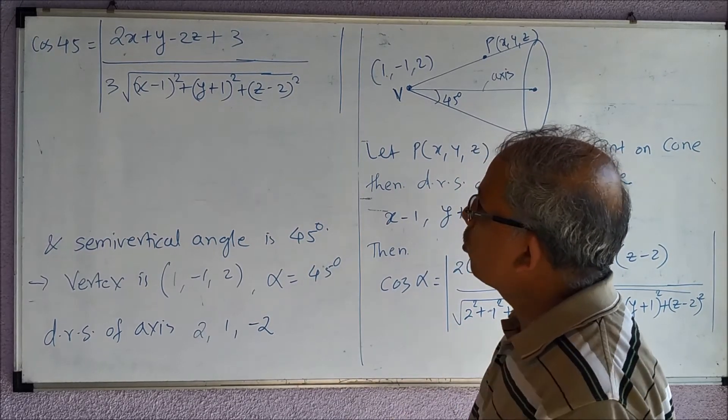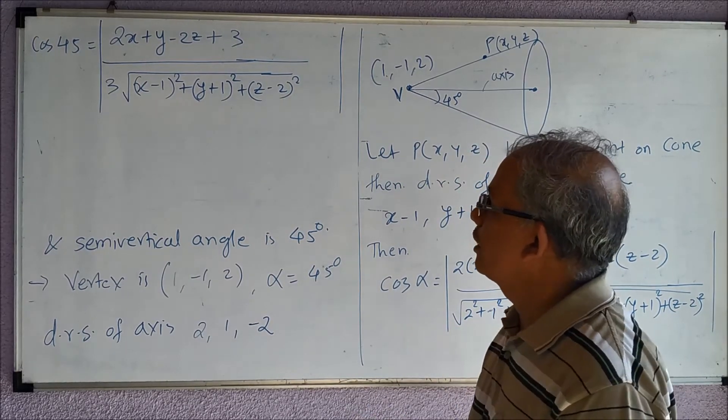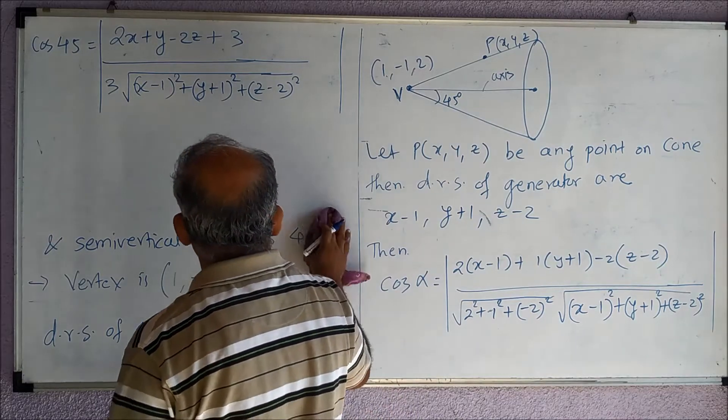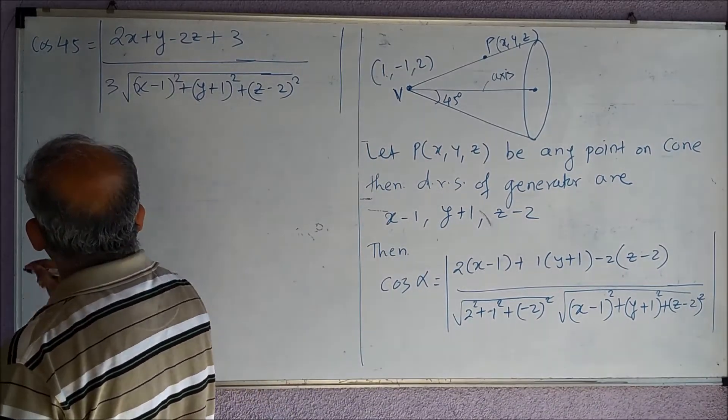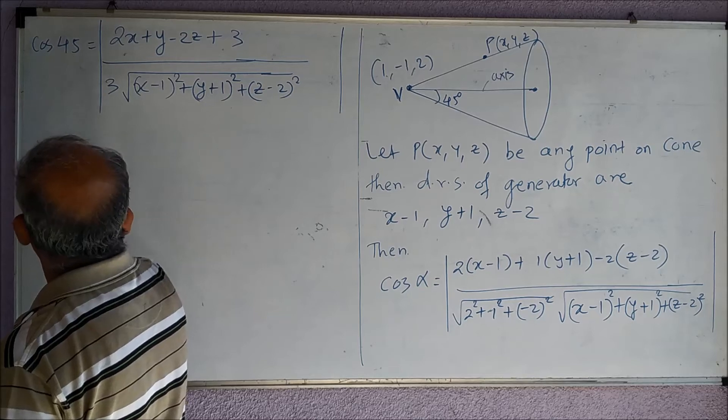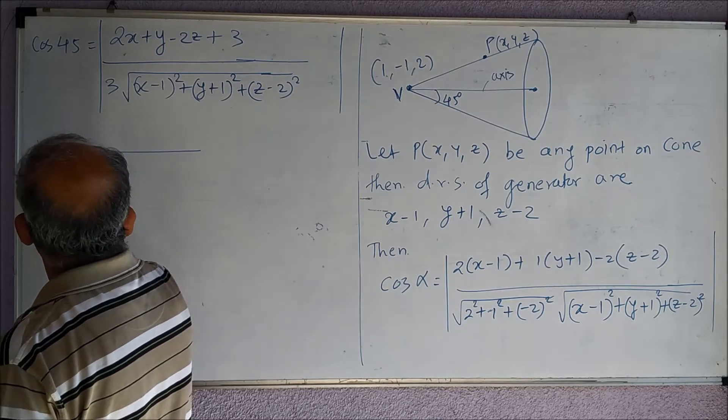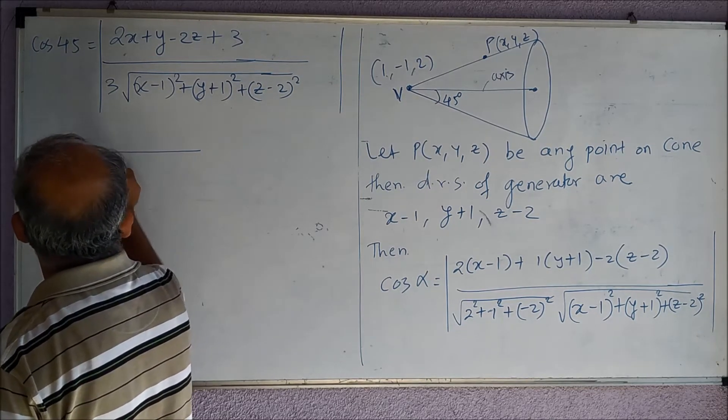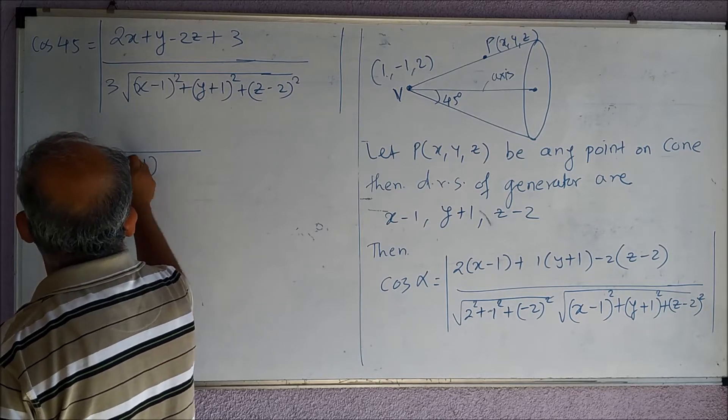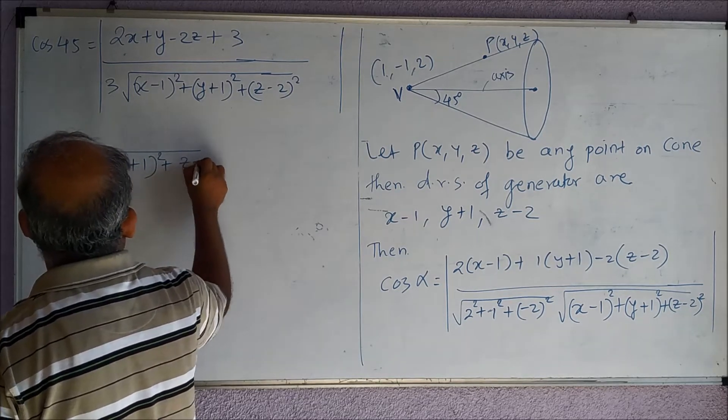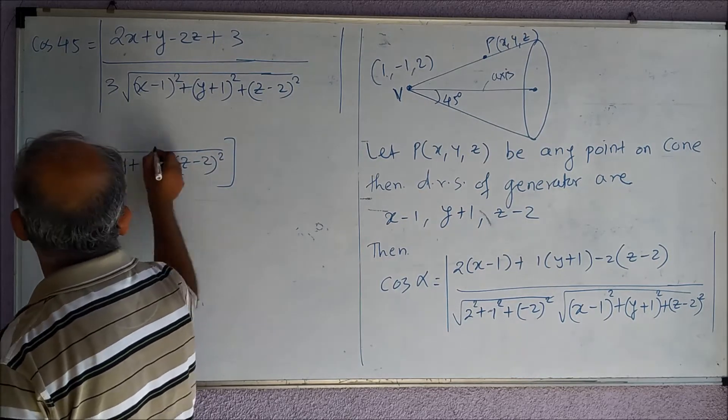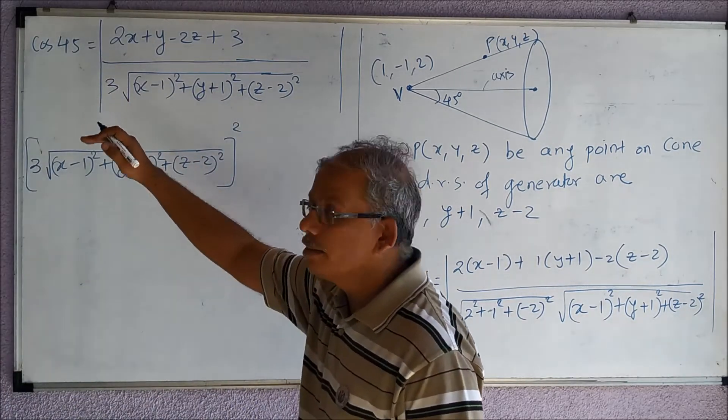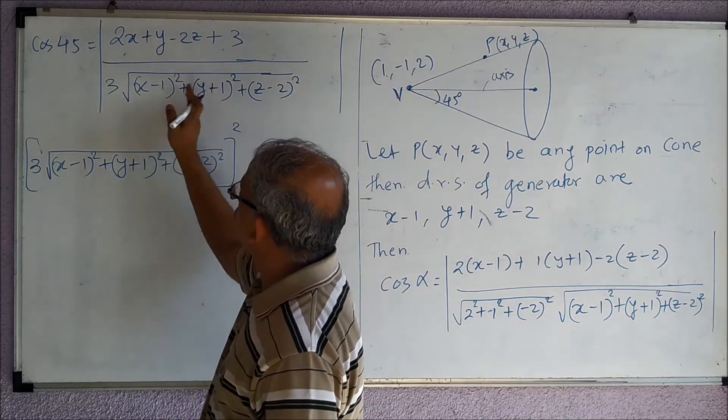Now we know the cos(45°) which is 1/√2. Then what we will do is we will cross-multiply and then square both sides. So we have here 3√((x-1)² + (y+1)² + (z-2)²)...